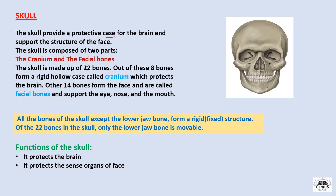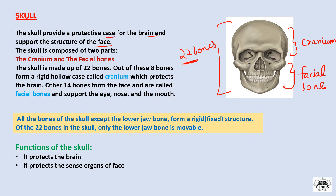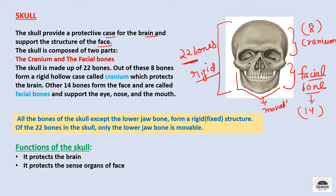Skull. The skull provides a protective case for the brain and supports the structure of the face. Our skull consists of two parts: the cranium and the lower part, facial bones. Our skull is made up of 22 bones — 8 bones form the cranium and 14 bones form the face, called facial bones. These support our eyes, nose, and mouth. The bones of the skull are rigid, meaning fixed. But the lower jaw bone is movable — out of all 22 bones, only the lower jaw bone is movable. Functions of the skull: it protects the brain and the sense organs of the face.